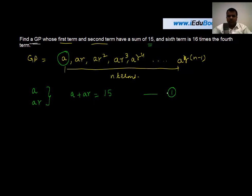And the sixth term is 16 times the fourth term. Now the sixth term, what do we write as the sixth term? We write it as ar^(6-1) or ar⁵. And the fourth term can be written as ar^(4-1) or ar³.